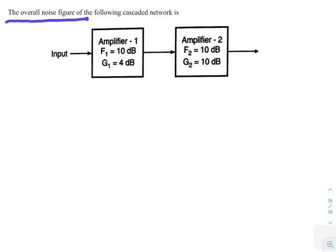The overall noise figure of the following cascaded network is given. Two amplifiers, Amplifier 1 and Amplifier 2, with noise figures F1 and F2 and gains G1 and G2 are given.